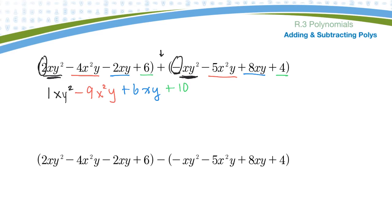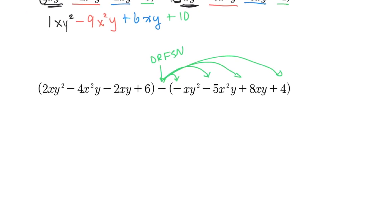If I have a subtraction in the polynomial, that is what I typically call a dirty, rotten, filthy, stinking negative, just because students always mess that up. And what you have to do is you have to apply that negative sign to every term in the expression, and then you can collect like terms. So let's do that.